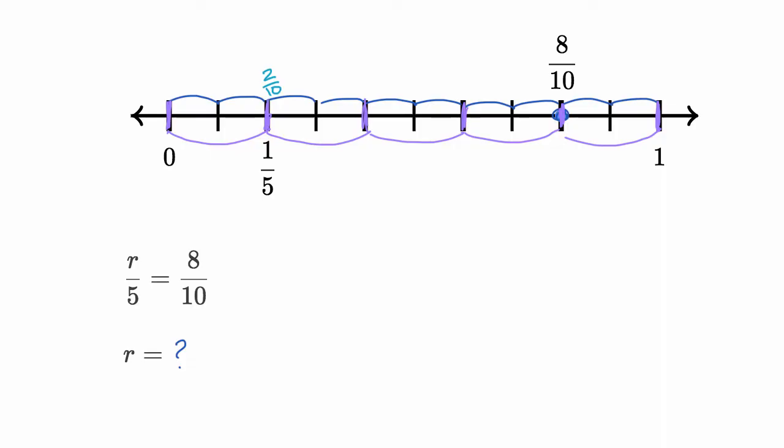All right, well, this is one fifth. If we do one more jump of a fifth, that would be two fifths. Then if we go another fifth, that will get us to three fifths. And then if we go another fifth, that will get us to four fifths.